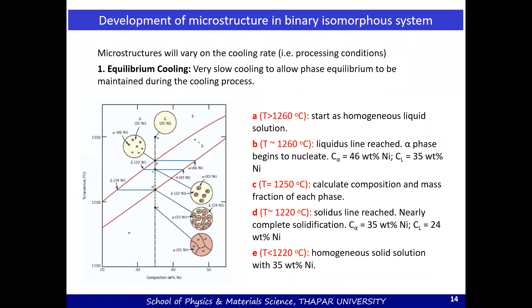The process we are trying to learn under equilibrium or non-equilibrium cooling is referred to as development of microstructure. We are trying to understand how the internal microstructure of the solid forms in an isomorphous system. To understand that, let us look at this particular phase diagram. The black dotted line represents the concentration we have in our system. Let us assume our initial system contains 35 weight percent of nickel, with the rest being copper.